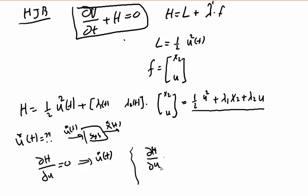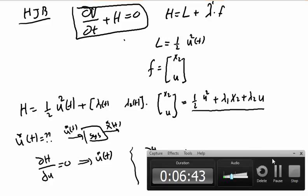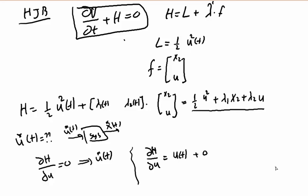dH/du will be equal to: when we differentiate, we get u(t) plus 0 when we differentiate this with respect to u, plus λ2. So we have u*(t) = 0, which equals -λ2(t). This is the first part of this video.